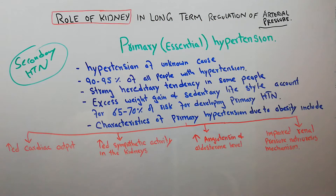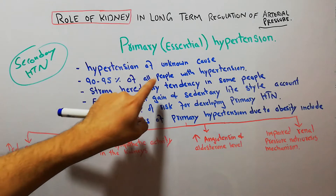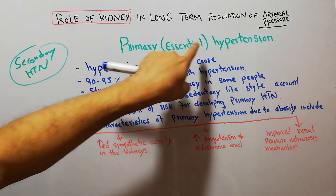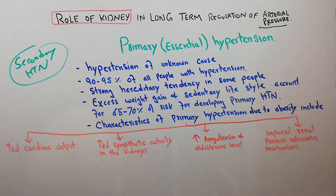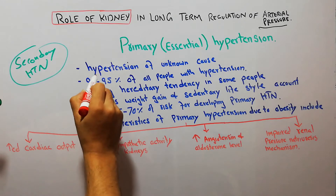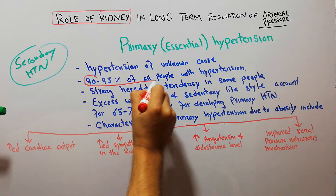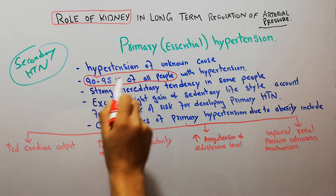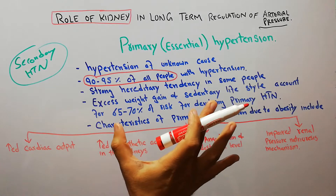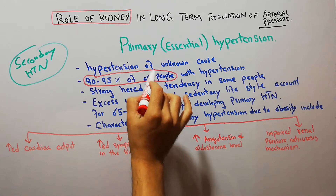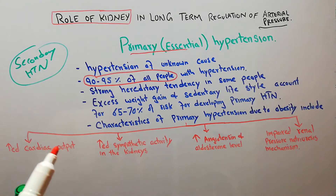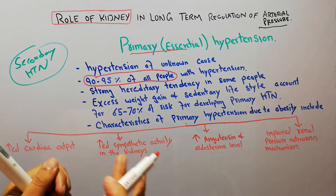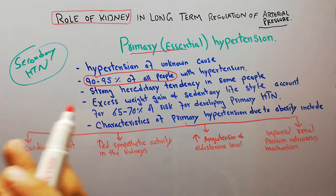Out of all the people with hypertension, 90 to 95 percent have primary or essential hypertension. This simply means that the prevalence of primary or essential hypertension is very high.